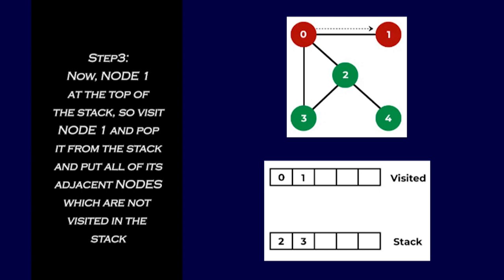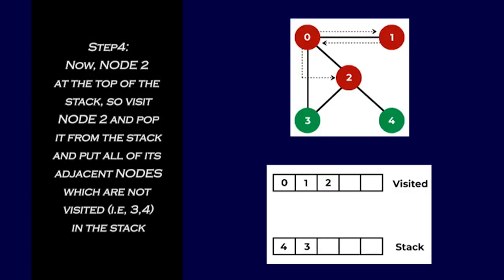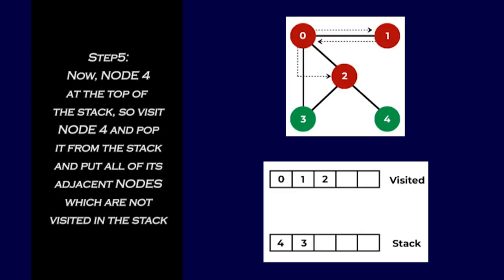Step three: node one is now at the top of the stack — visit node one and pop it from the stack, putting all its adjacent unvisited nodes into the stack. Step four: node two is now at the top of the stack — visit node two and pop it from the stack, putting all its unvisited adjacent nodes — three and four — into the stack.